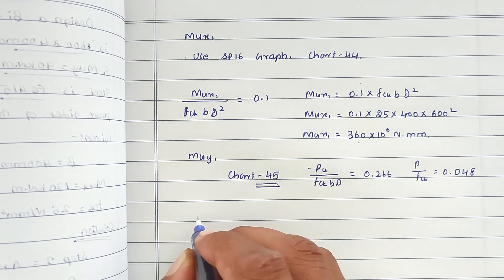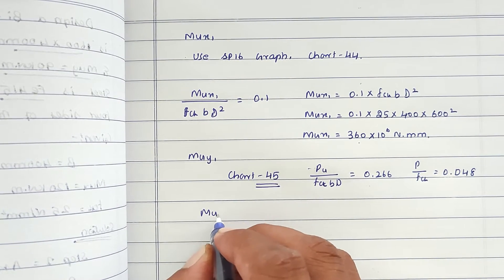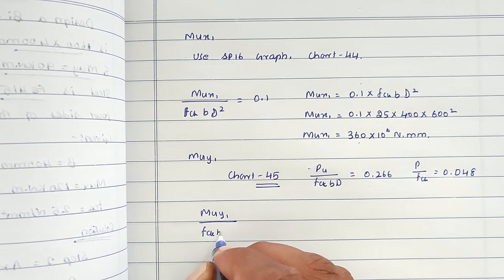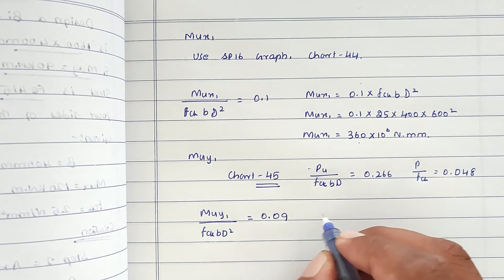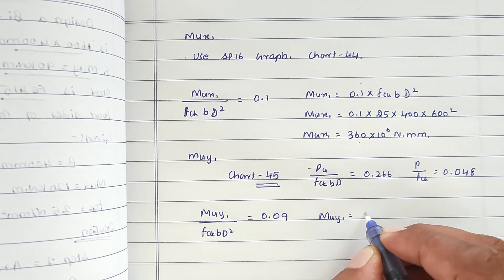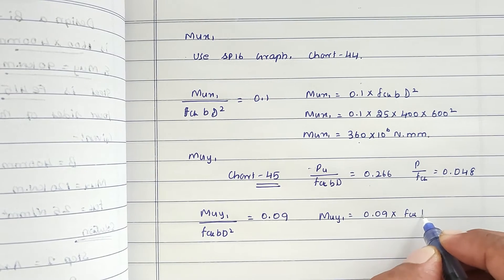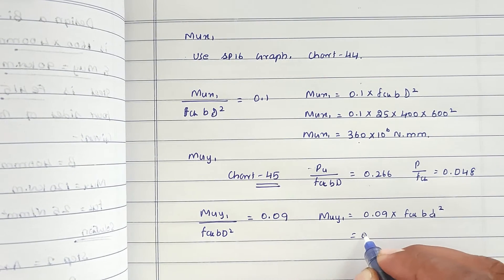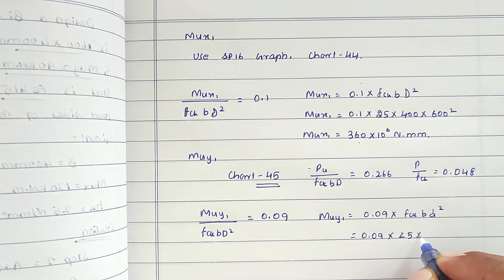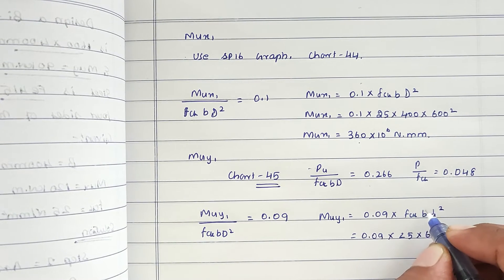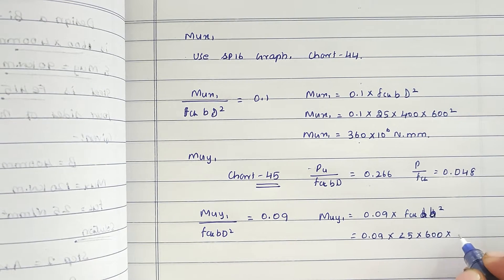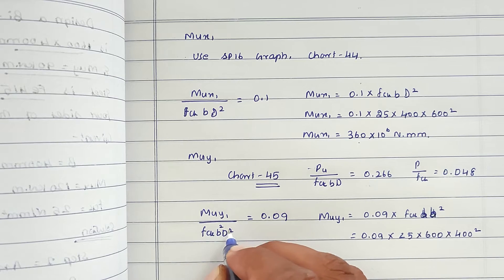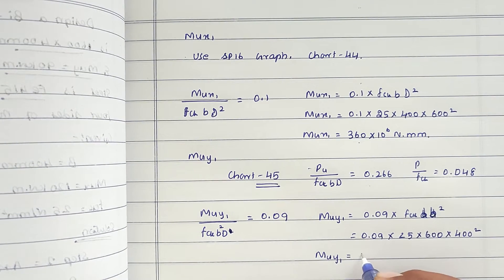From SP16 chart 45, MUY1/(fck·B²·D) = 0.09. So MUY1 = 0.09 × fck × B² × D = 0.09 × 25 × 400² × 600 = 216×10⁶ N·mm.